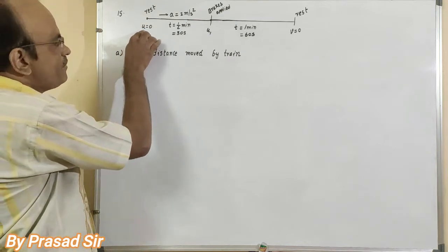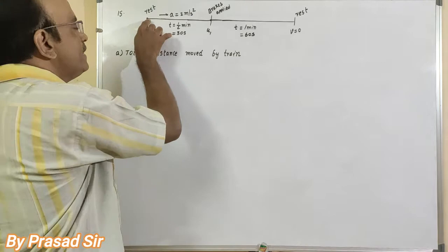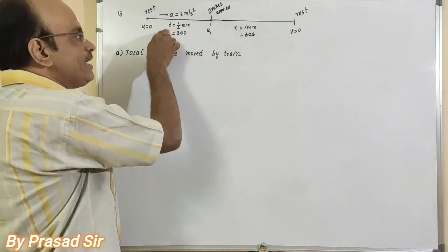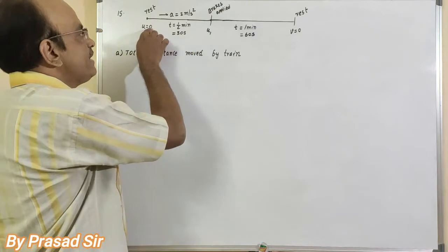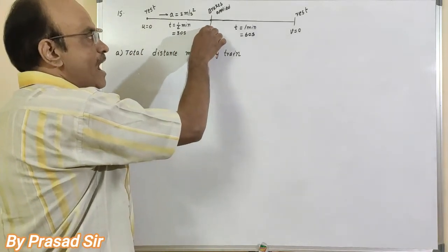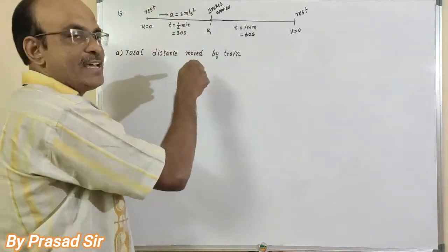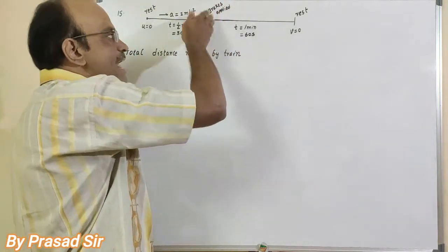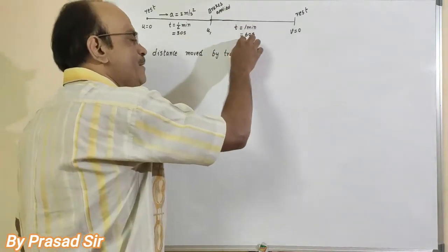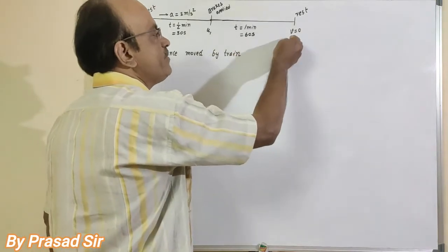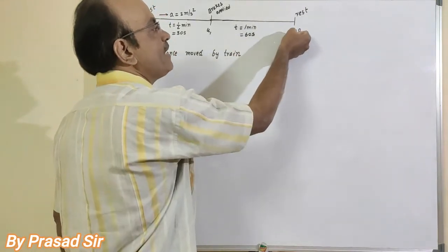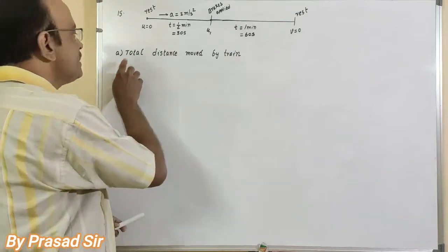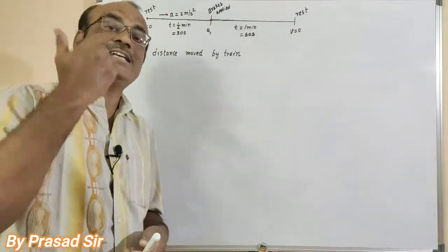In this question, the train starts from rest, meaning initial velocity u = 0. It travels with acceleration 2 m/s² for half a minute, that is 30 seconds, covering some distance. After that, the brakes are applied and it travels with deceleration for 1 minute, that is 60 seconds, until velocity becomes zero.